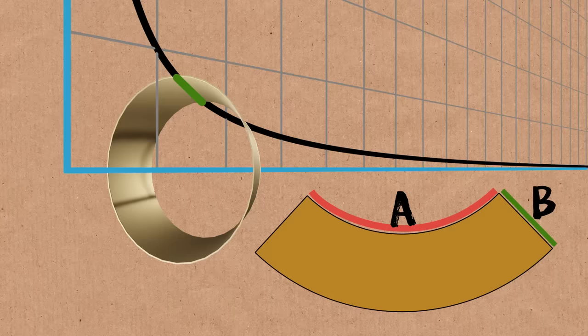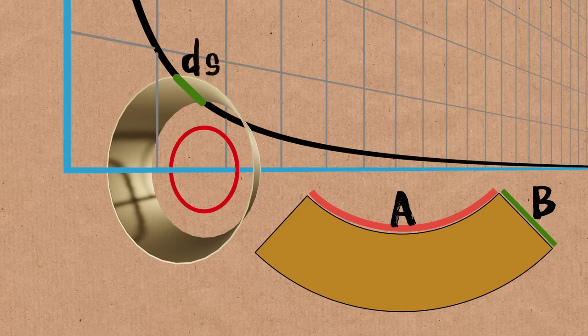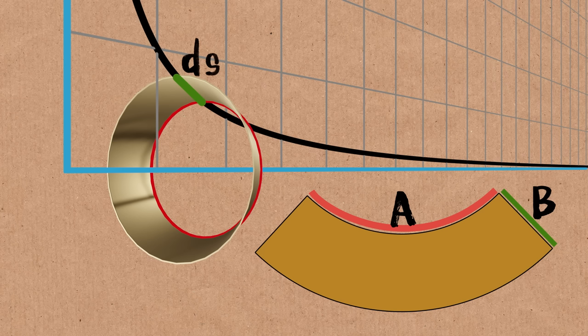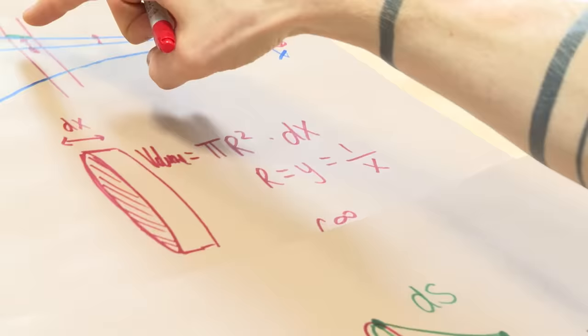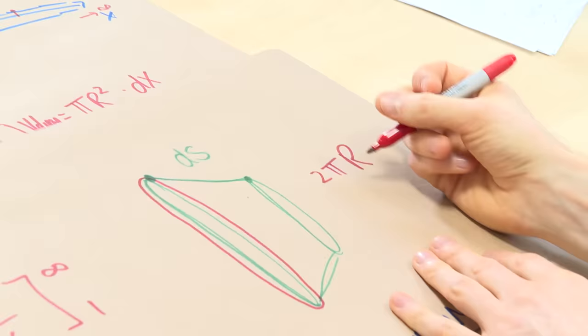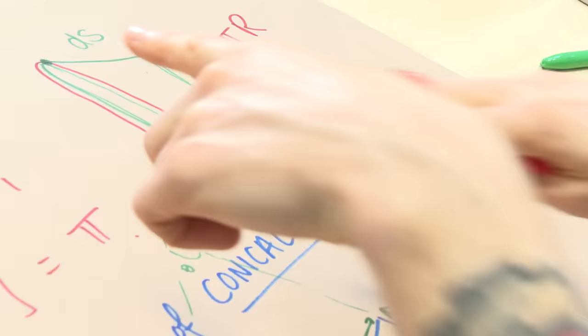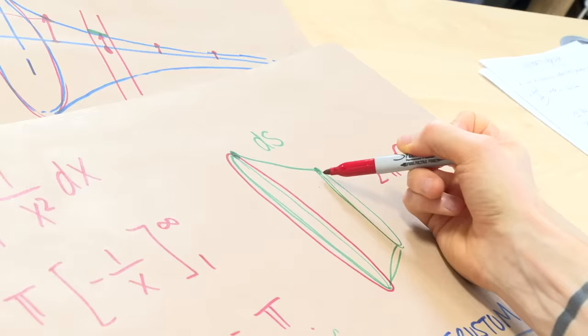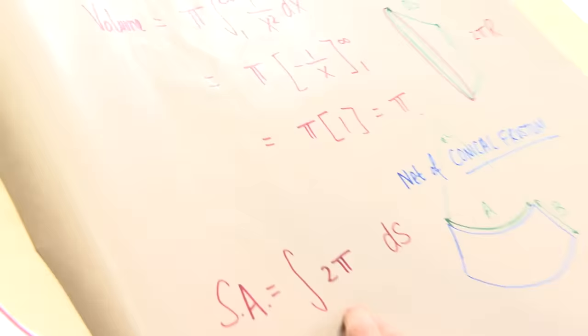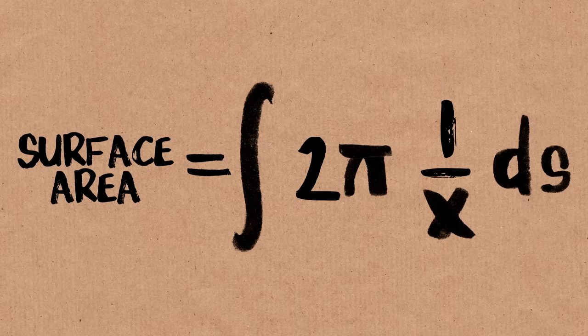The length A is the circumference of the circular cross-section of the horn: 2π times the radius. The radius is given by y = 1/x, the distance from the axis to the curve. So the surface area element is ds × 2πr = 2π(1/x) ds. We integrate this: the surface area equals the integral of 2π(1/x) ds.